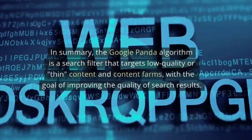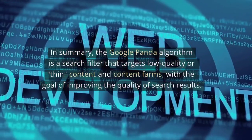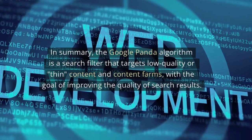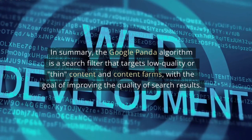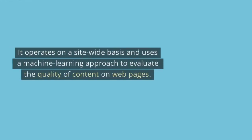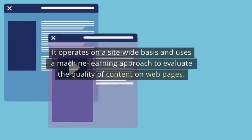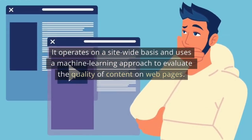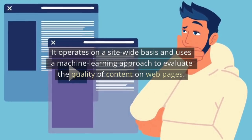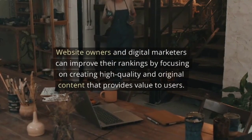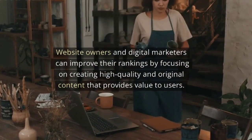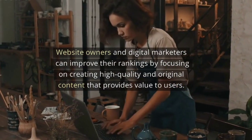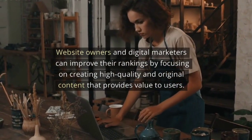In summary, the Google Panda algorithm is a search filter that targets low-quality or thin content and content farms, with the goal of improving the quality of search results. It operates on a site-wide basis and uses a machine learning approach to evaluate the quality of content on web pages. Website owners and digital marketers can improve their rankings by focusing on creating high-quality and original content that provides value to users.